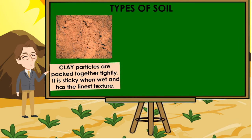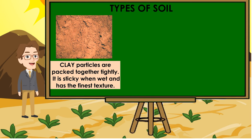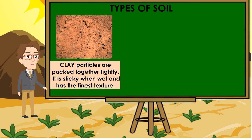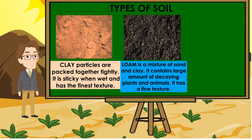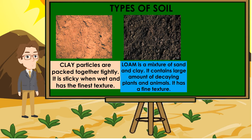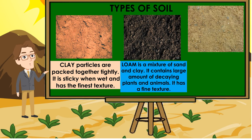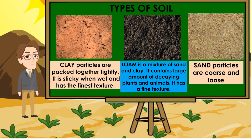Clay particles are packed together tightly. It is sticky when wet and has the finest texture. Loam is a mixture of sand and clay; it contains a large amount of decaying plants and animals and has a fine texture. Sand particles are coarse and loose.